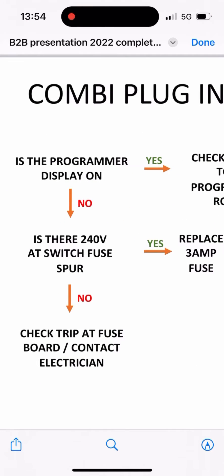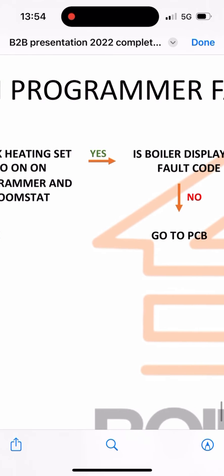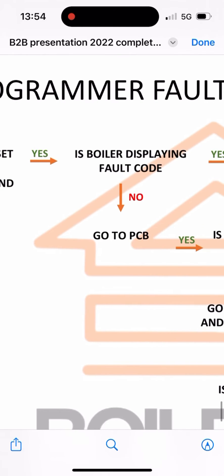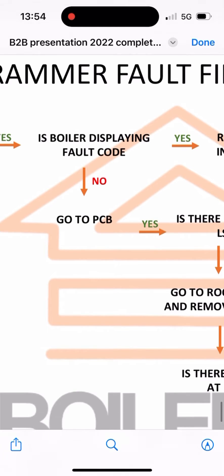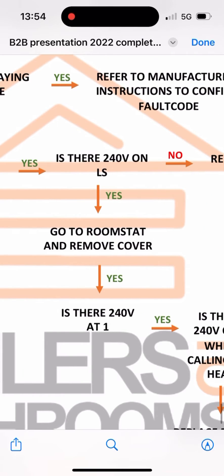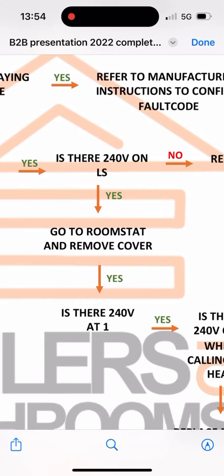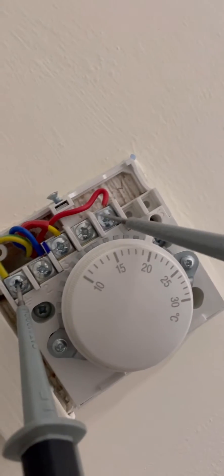There's a programmer display on, yeah. Check the heating's calling - it's an MT10 so there's no display but you can hear it ticking. Is the boiler displaying a fault code? No. Go to the PCB, whip the back off. Is there 240 on LS? Check F to LS - yeah, 240.